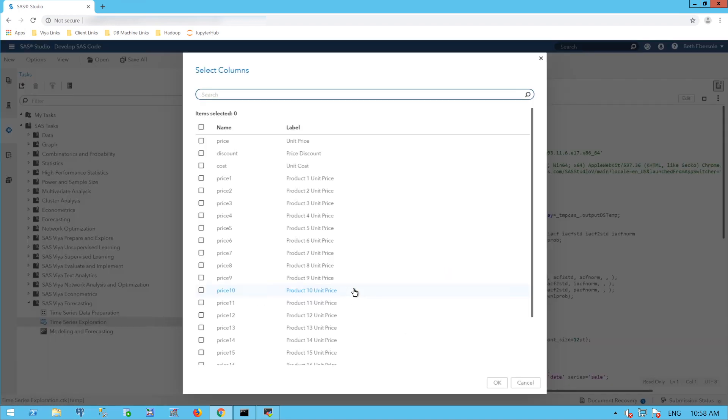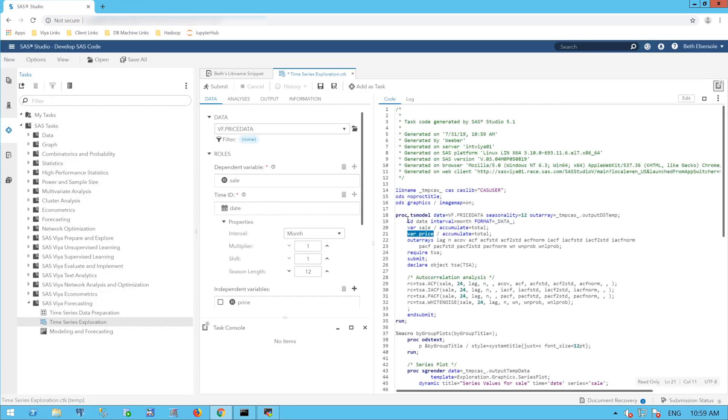Let me add Price as my independent variable. So I have my PROC TSA model, my ID, Date Statement, and two variables: the dependent variable Sale, and the independent variable Price.